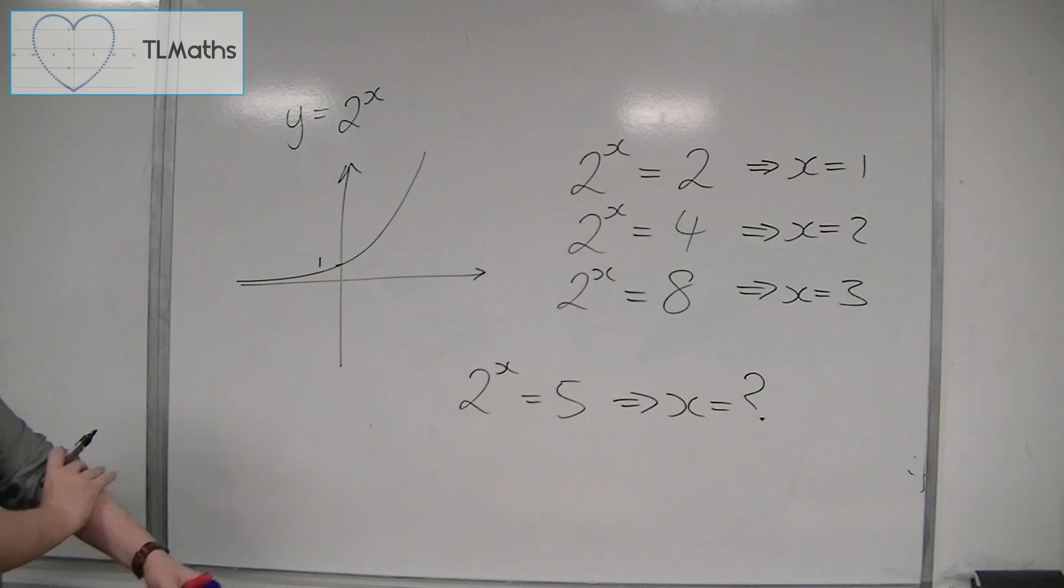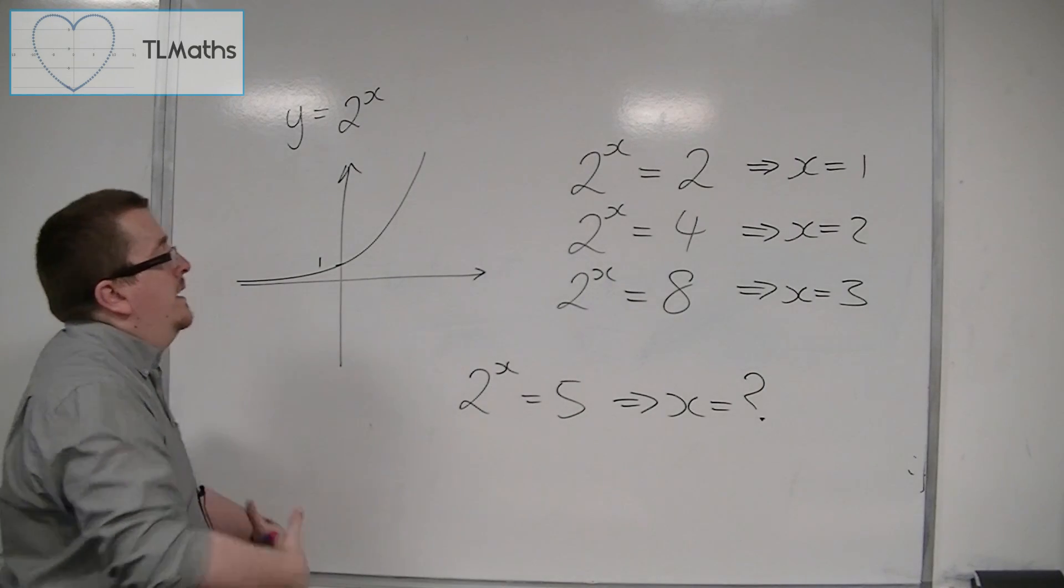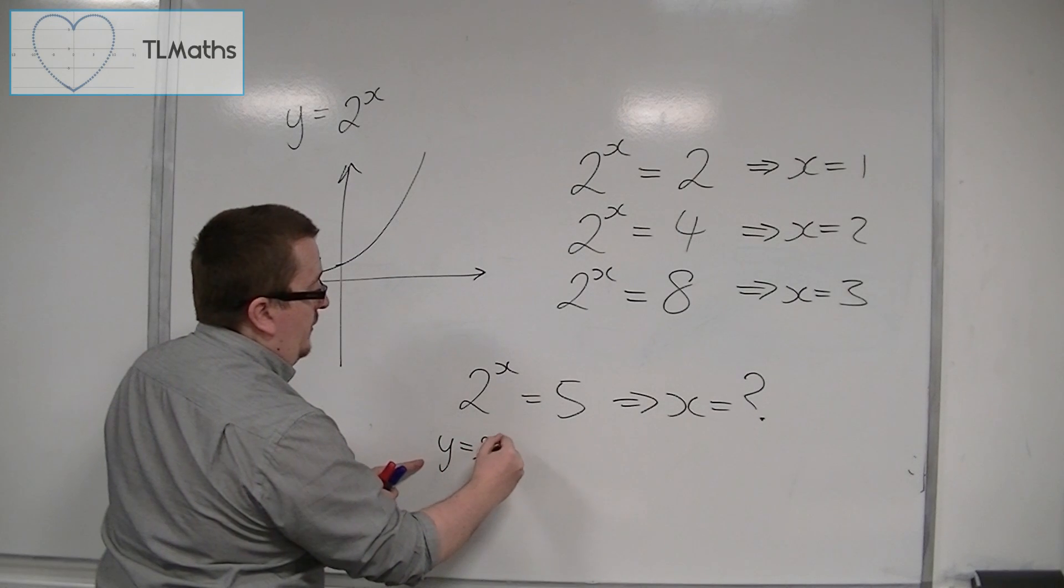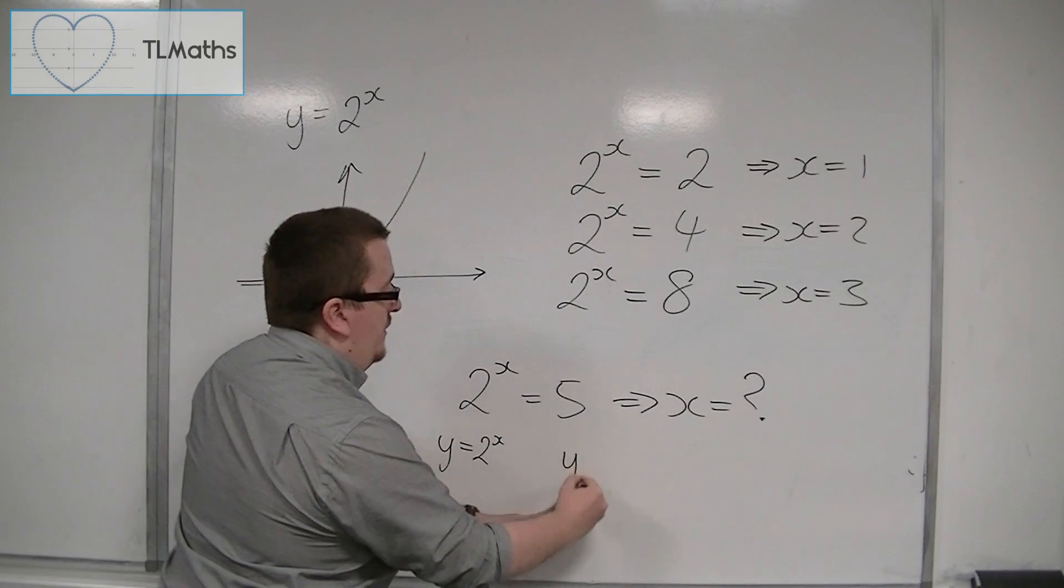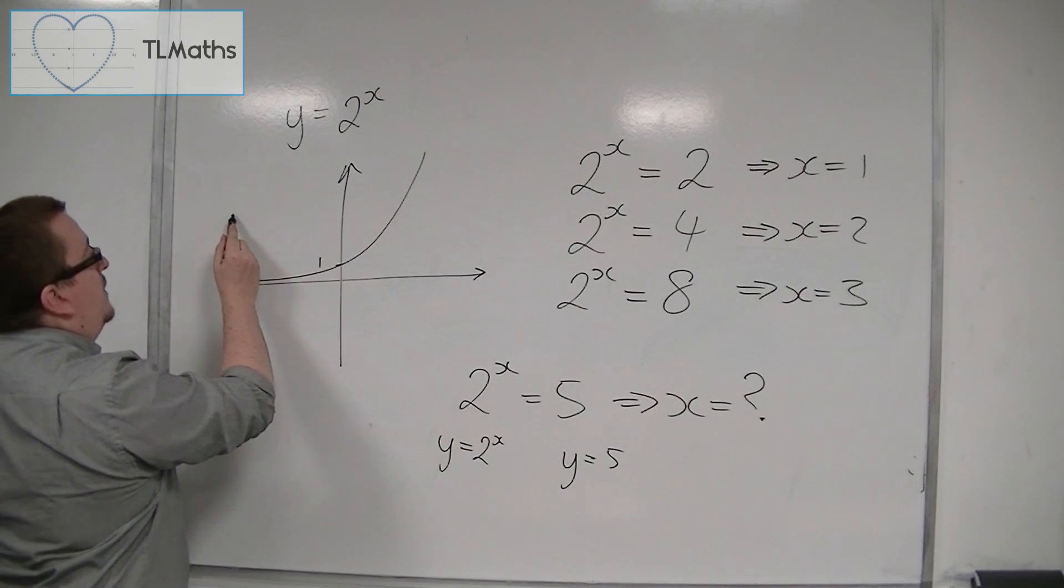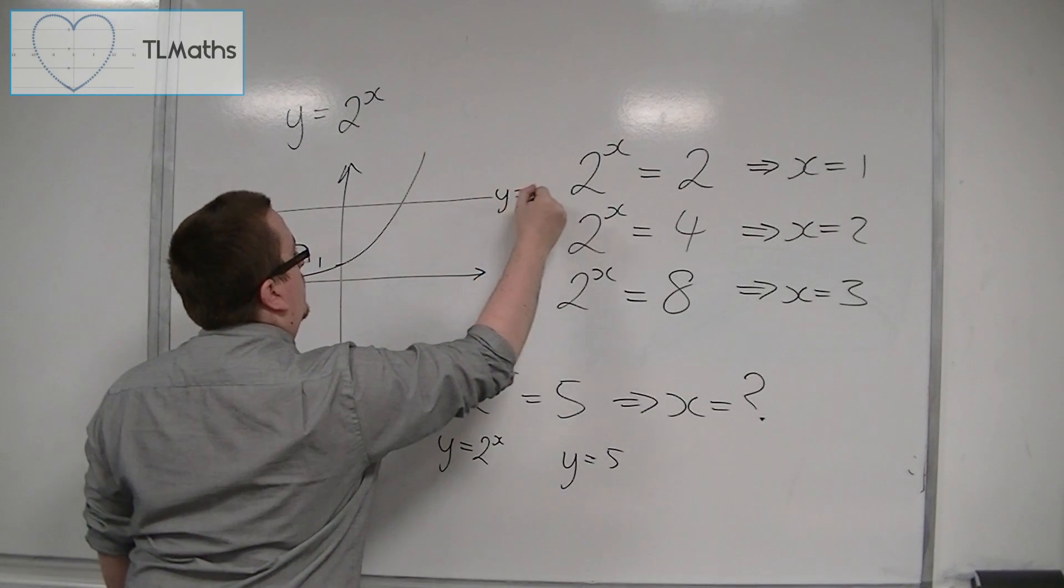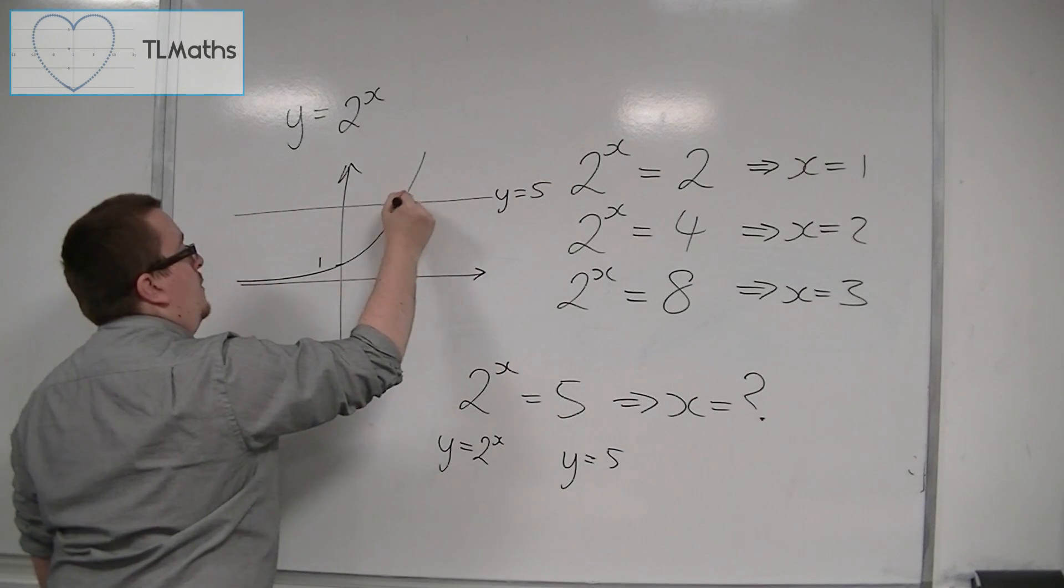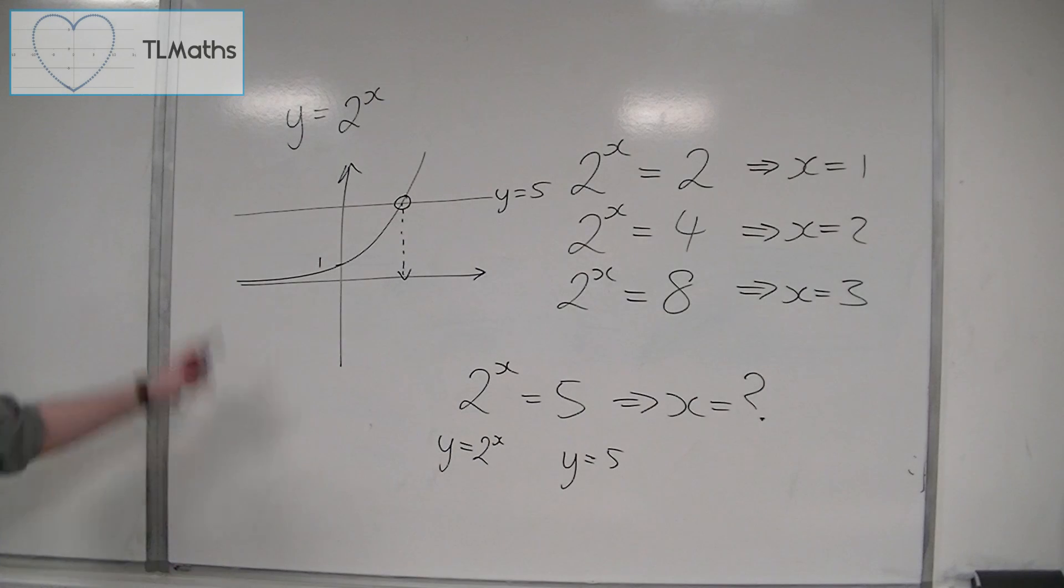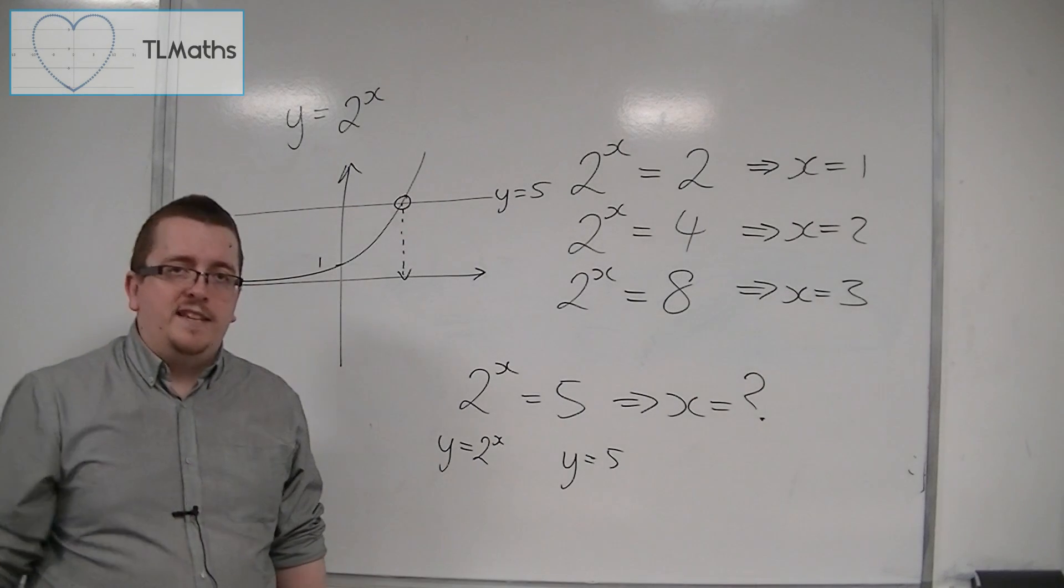Ultimately, what we're asking here is where does the curve y is equal to 2 to the x intersect y is equal to 5? So here is my line y is equal to 5. I want to know the x value of where the straight line and the curve intersect.